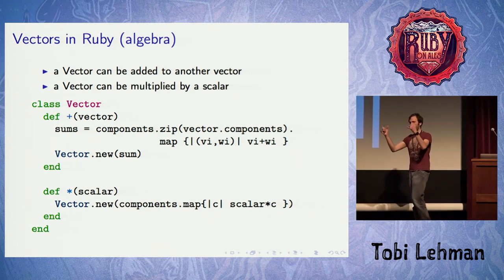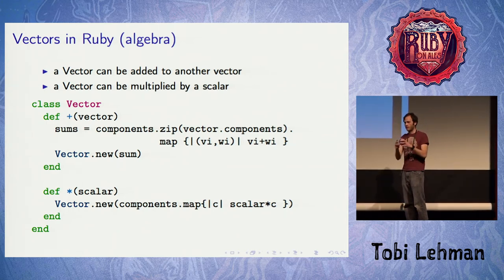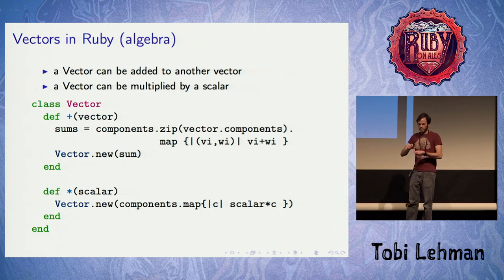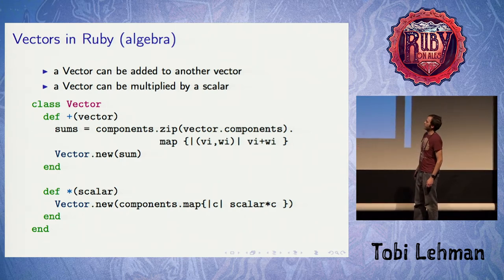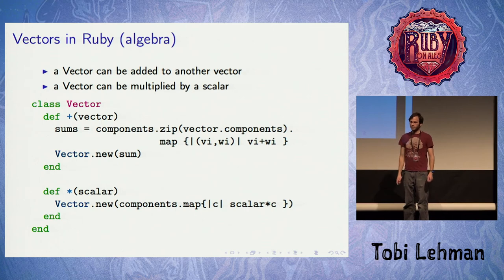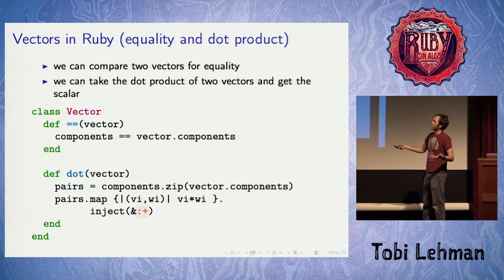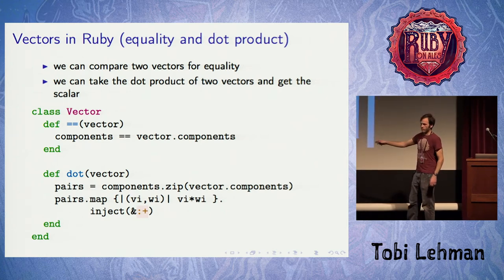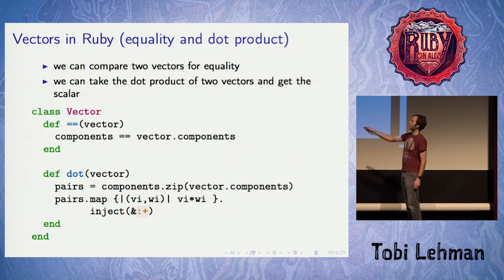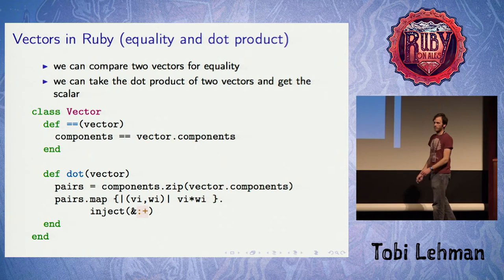Zip takes two arrays of the same length and produces a new array where each element is a pair — so ABC zipped with XYZ gives pairs (A,X), (B,Y), (C,Z). Summing those together gives a single new vector representing the sum. Scalar multiplication is easy — we just multiply the scalar by the component numbers themselves. We also want to check whether two vectors are equal, and most importantly, we want to be able to dot vectors — again zip them together, multiply the components, and sum them up. That gives us a dot product we can do science with.